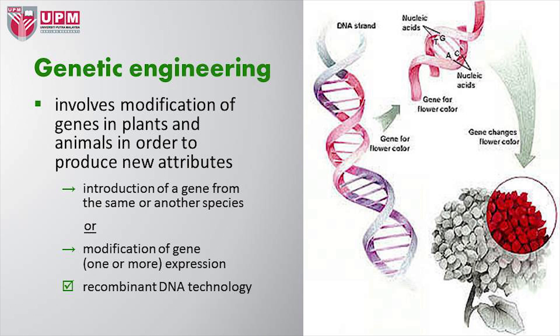This is a diagram which explains how the operational procedure for genetic engineering happens. You have a gene, for example, this gene is supposed to code for flower colour, and this particular gene is then extracted and gone through a process where it is multiplied and then inserted into the target. Now this is a technology that is also known as recombinant DNA, and it has been widely used in many different crops to make things more efficient and more desirable.